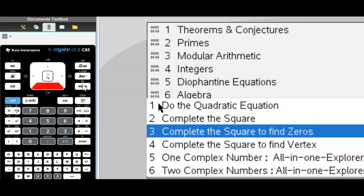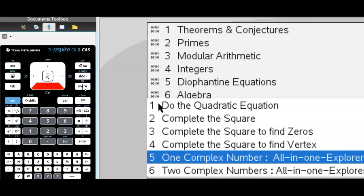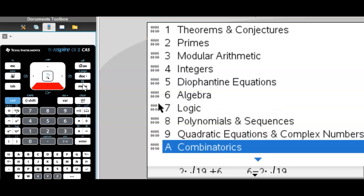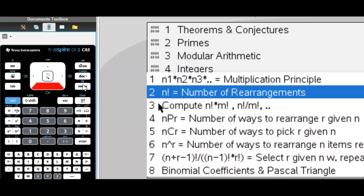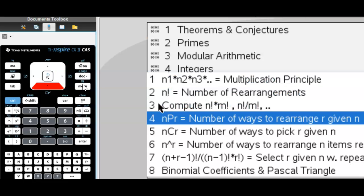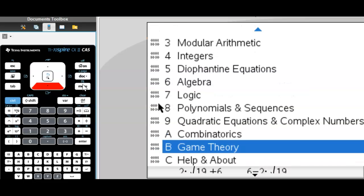You can also complete the squares to find zeros and vertices. You can analyze complex numbers. You can see combinatorics—compute the number of rearrangements, NPR, NCR, etc. can all be done with this program.